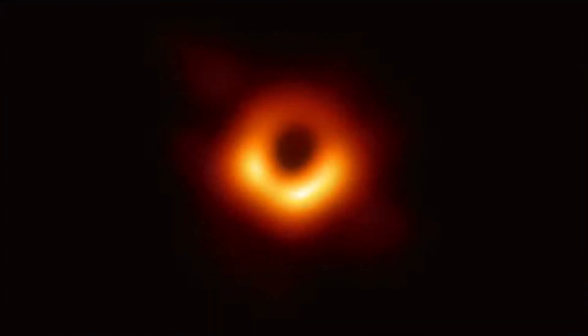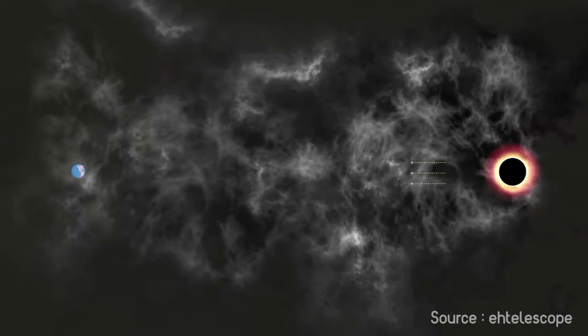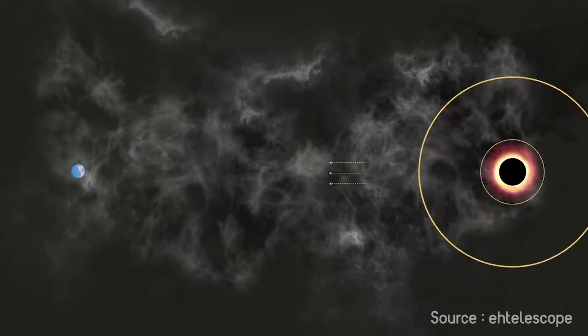From the first-ever image of the black hole, we can observe that there is an enormous gravitational field capturing nearby matter. Despite its size, the black hole is so far from Earth that capturing the image took a telescope the size of the planet.